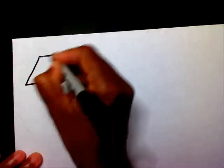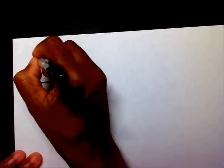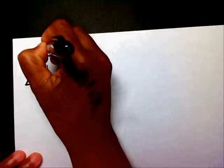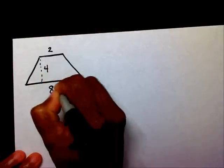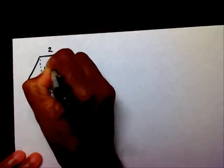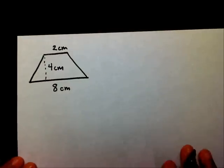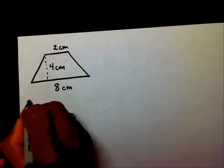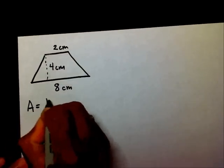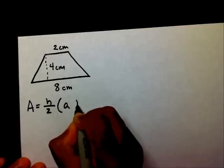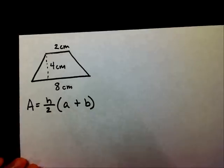All right. I'll draw a trapezoid here. Let's say that's 4. This is 2, and this side is 8, and we're going to say they're centimeters. So, my formula is a equals h divided by 2, a plus b. Well, first I need to label all of my pieces.